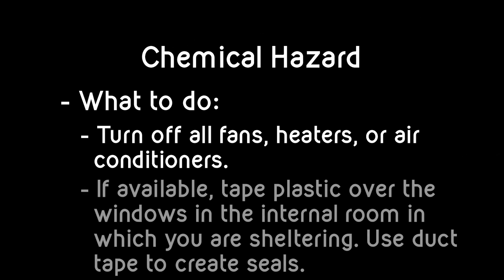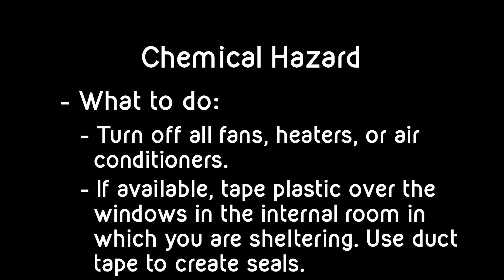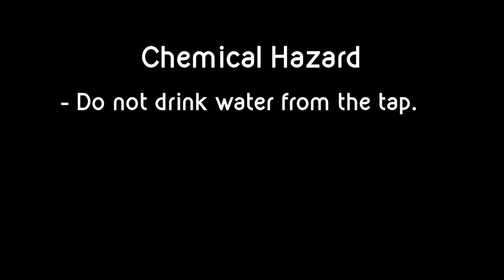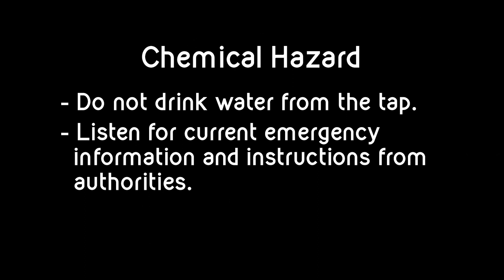What to do? Turn off all fans, heaters, or air conditioning. If available, tape plastic over windows in the internal room in which you are sheltering. Use duct tape around the windows and doors and make an unbroken seal. Tape over vents and seal any electrical outlets. Do not drink water from the tap — stored water will be safer. Listen for current emergency information and instructions from authorities.